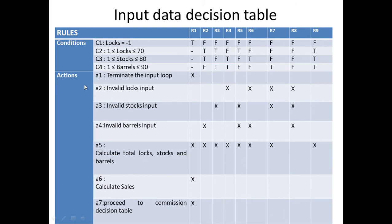The different actions are: action one — terminate the input loop whenever C1 is satisfied. For the second condition: invalid locks. For the third condition: invalid stocks. For the fourth condition: invalid barrels. After exiting the loop when C1 is satisfied, we can calculate total locks, total stocks, and sales. Using this information the gunsmith calculates total sales and proceeds to the commission decision table.